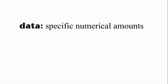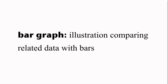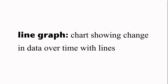Data refers to statistics, facts, or a list of numbers. An example of data: today's high temperature was 105 degrees. Analysis is the noun that relates to the verb analyze. Analyze means to examine carefully. A bar graph illustrates and compares data with bars. A line graph shows a change in data over time with lines.